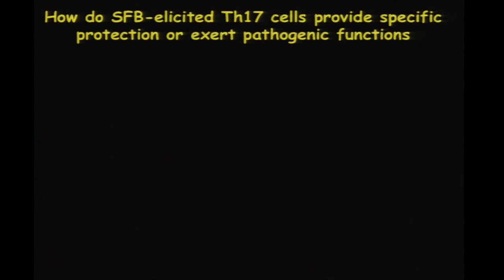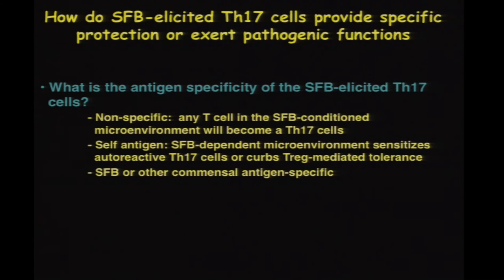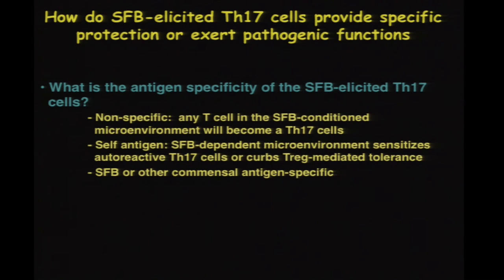How do SFB-elicited TH17 cells provide specific protection or exert pathogenic functions? One question is: what is the antigen specificity of the SFB-elicited TH17 cells? We can think of several possibilities: these cells are nonspecific; or they are particularly reactive to self-antigen, with the SFB-dependent microenvironment lowering the threshold for activation as auto-reactive TH17 cells; or this microenvironment curbs regulatory T cell-mediated tolerance. The third possibility is that these T cells are specific for SFB or other commensal antigens. I'll tell you about some of the experiments we did to look at this.